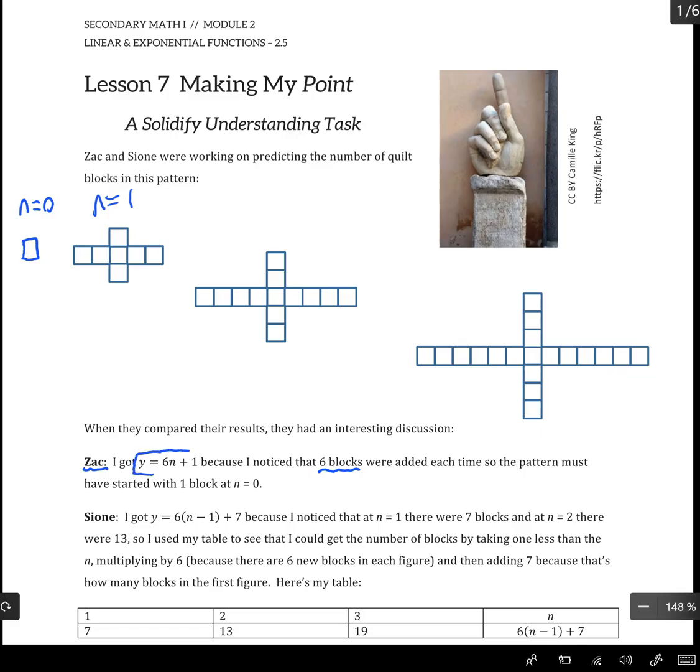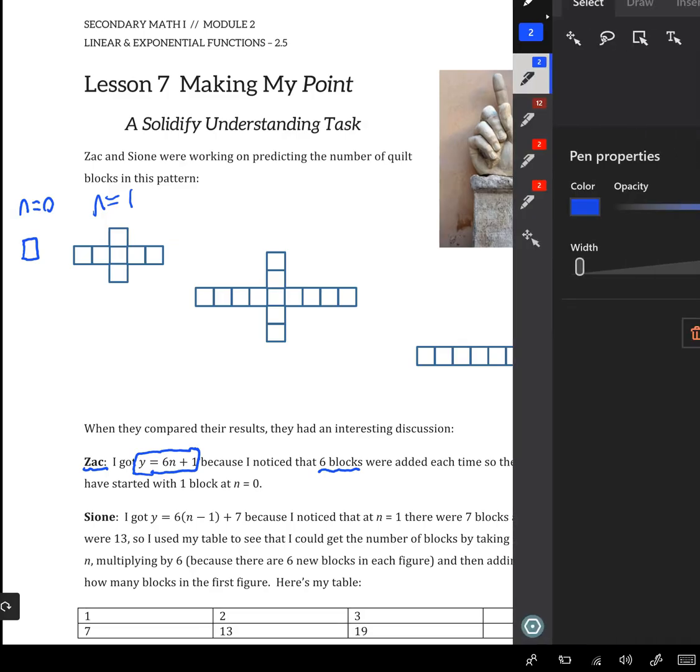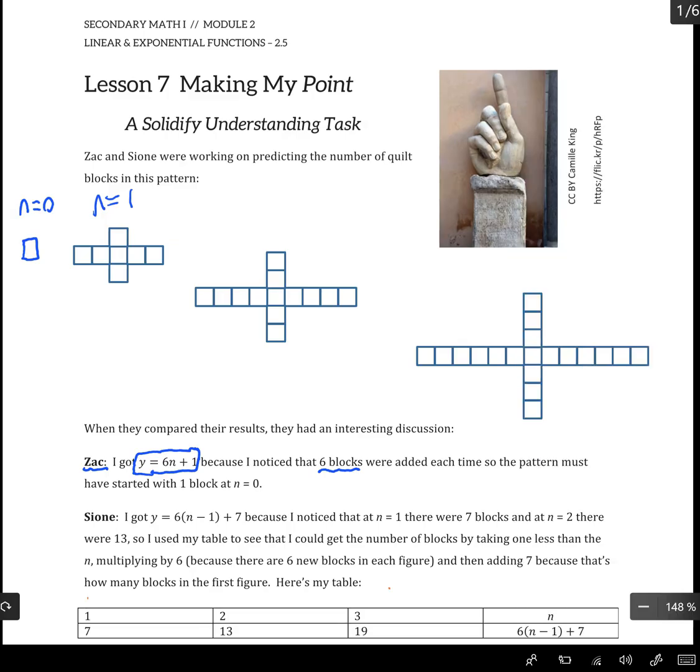Sion, on the other hand, she started from the first block. When we start at n equals 1, we have to do this n minus 1 adjustment to our rule. So she got 6 times (n minus 1) plus 7.